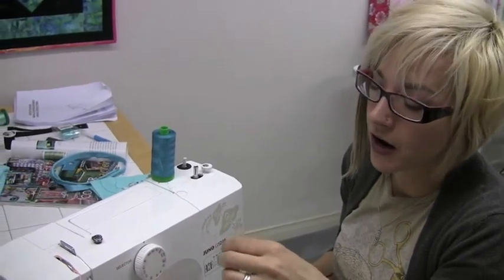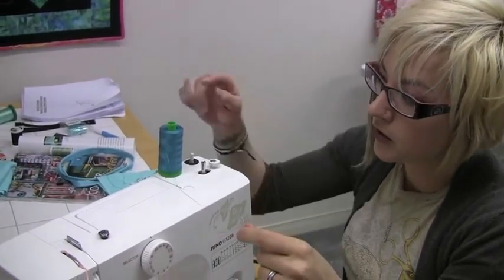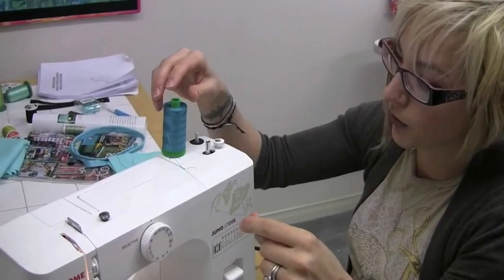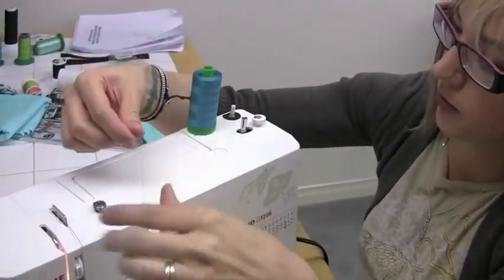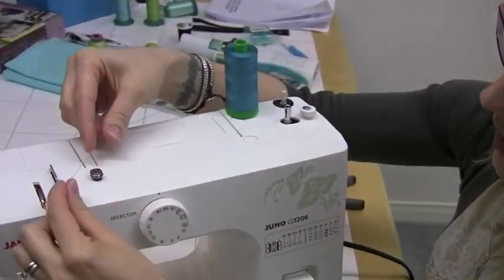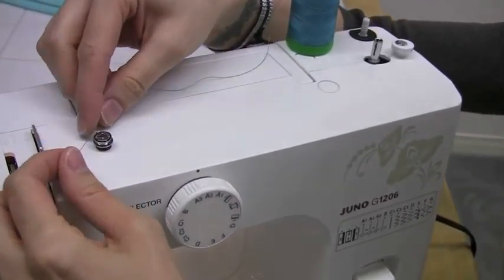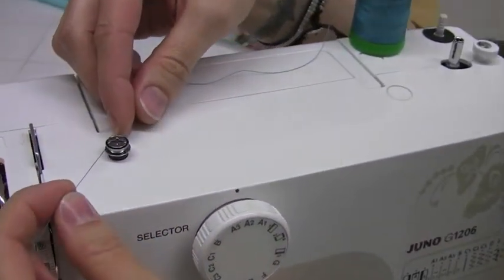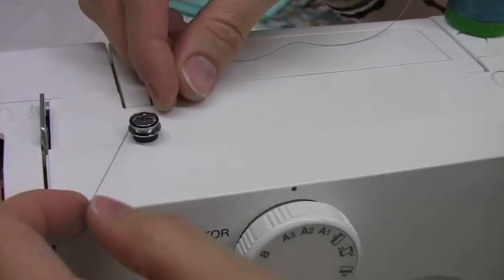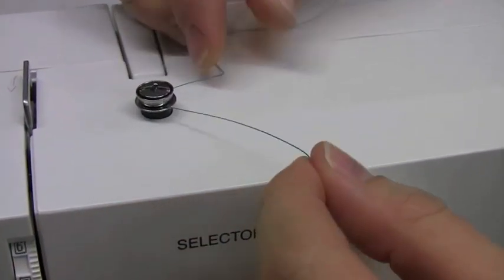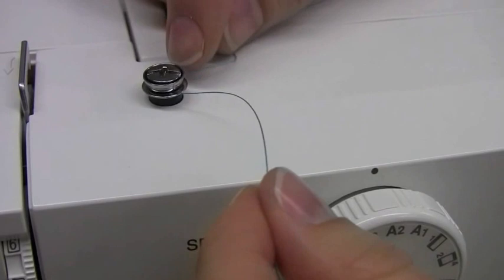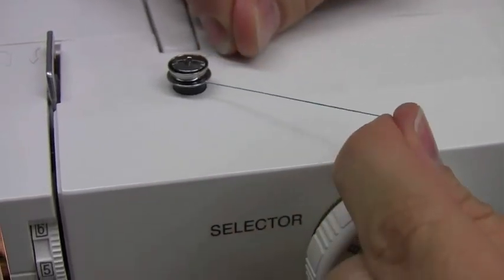I'm going to do a demonstration on how to wind your bobbin. You already have your thread on your thread pin and you're bringing the thread from here into the bobbin winder tension guide. You're not wrapping it around, you're just having it click around the back of it and you'll actually feel it click in.